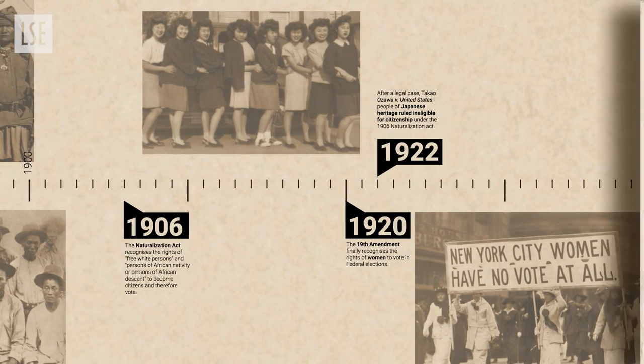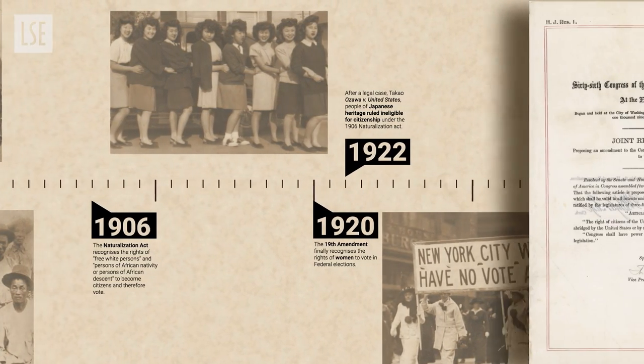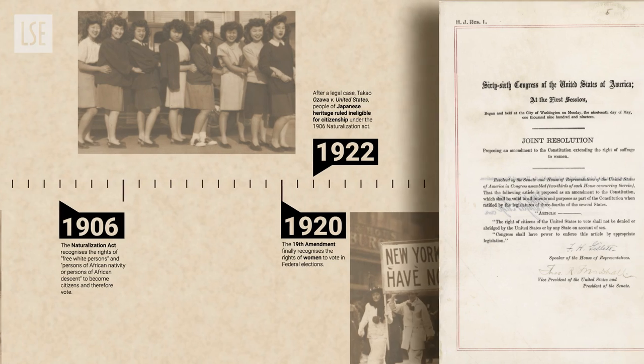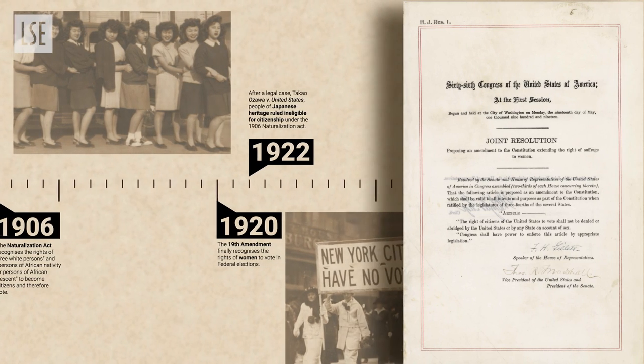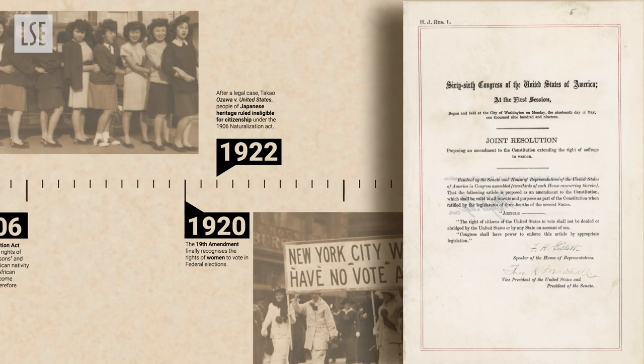Women got the right to vote in 1920. The current eligibility is citizen over 18, and that's basically it — except that there are felon disenfranchisement laws in a number of states.